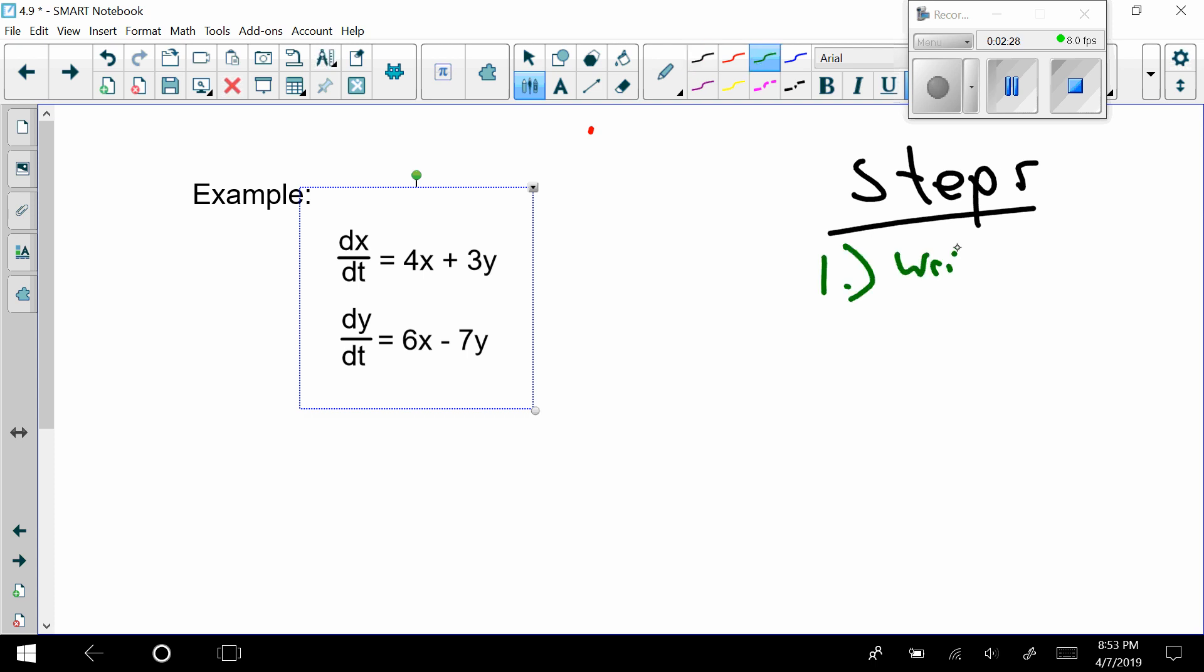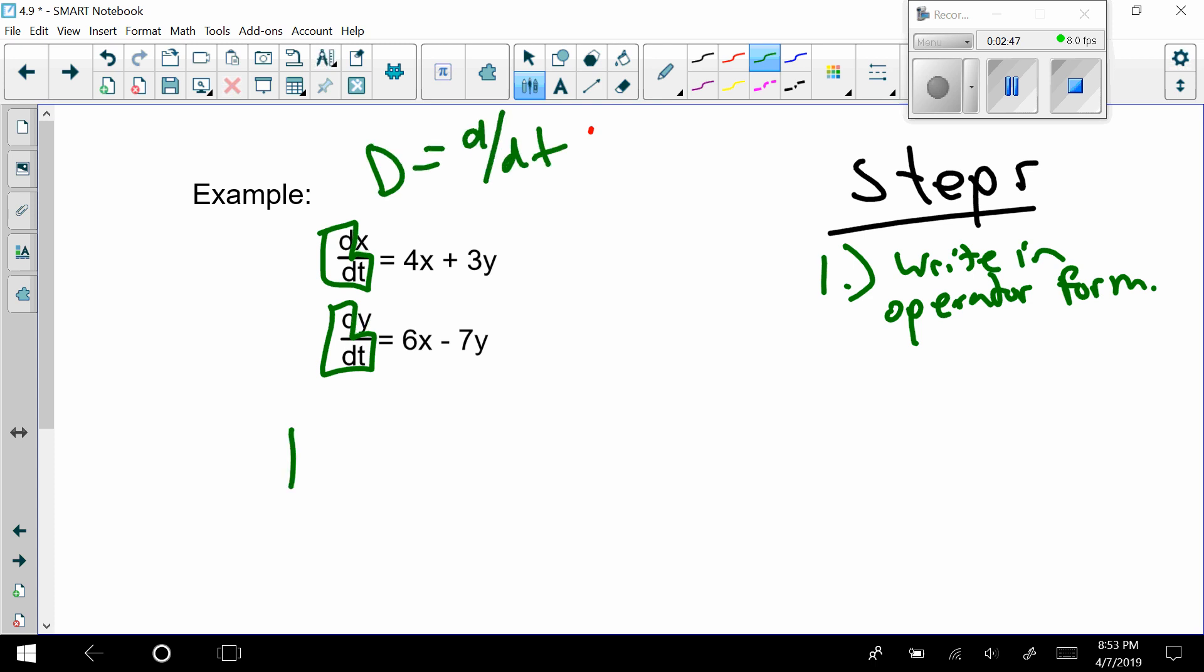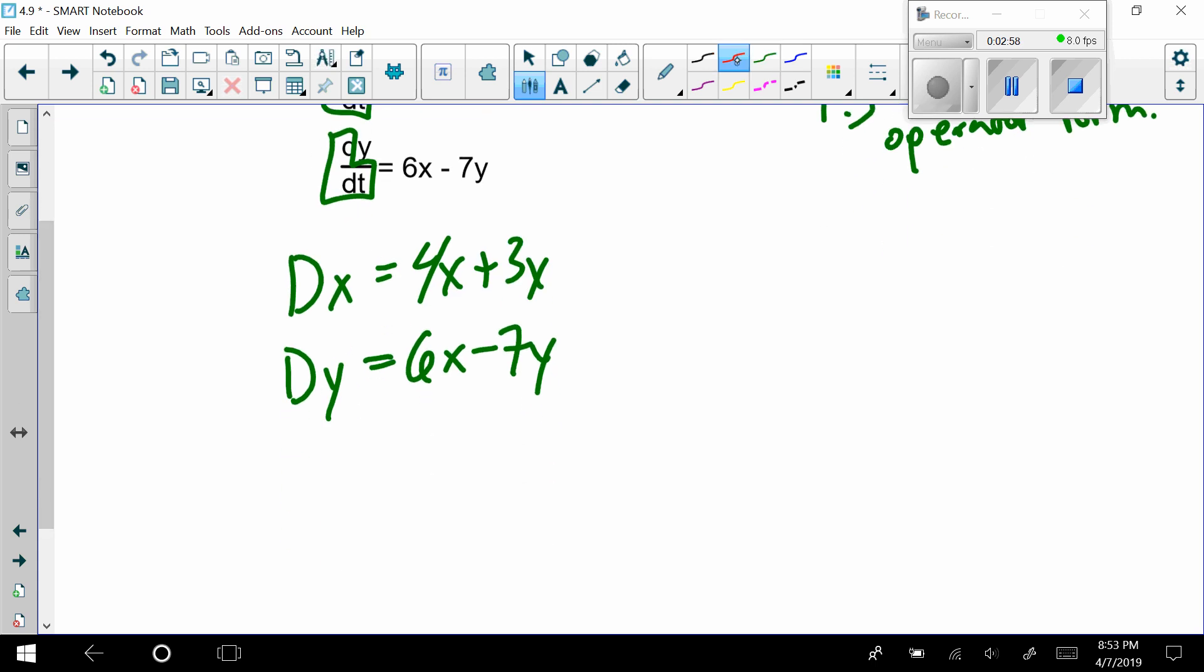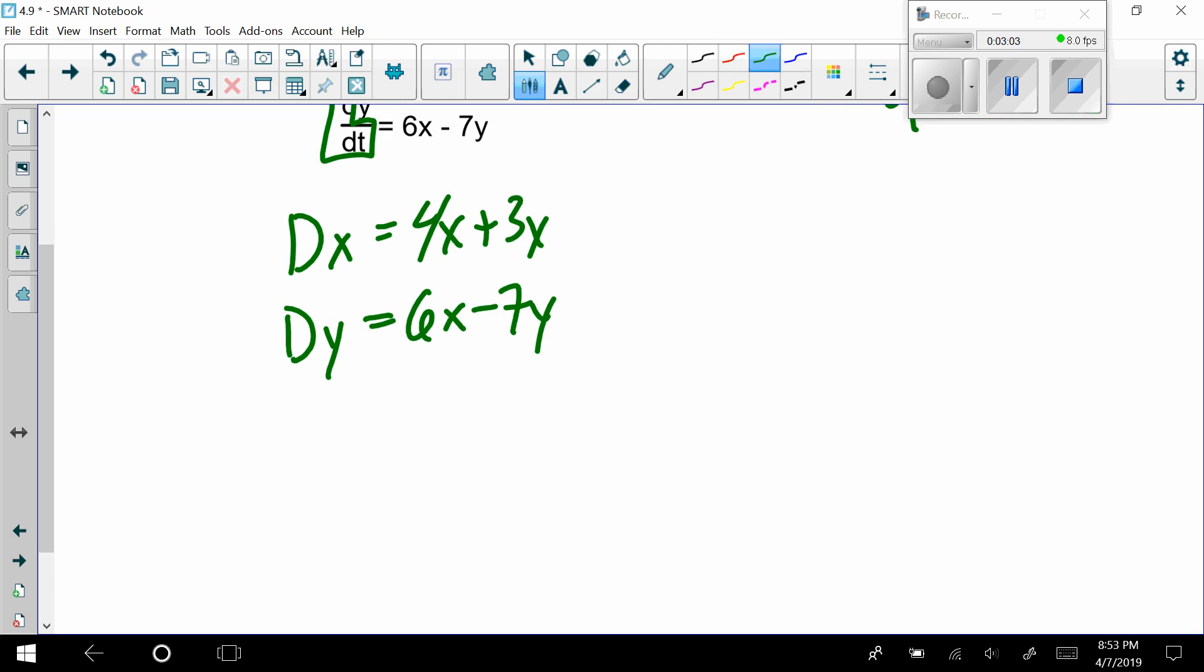Here, to start us out, let's get some steps. Step one: write in operator form. Right now, I see these d dt's sitting in here. Well, I know that t is the independent variable, so D equals d/dt. So when I rewrite this, this is Dx equals 4x plus 3y. This is Dy equals 6x minus 7y. Then what would I do? Well, typically we want to have it in standard form. So maybe I'll make these into standard form.